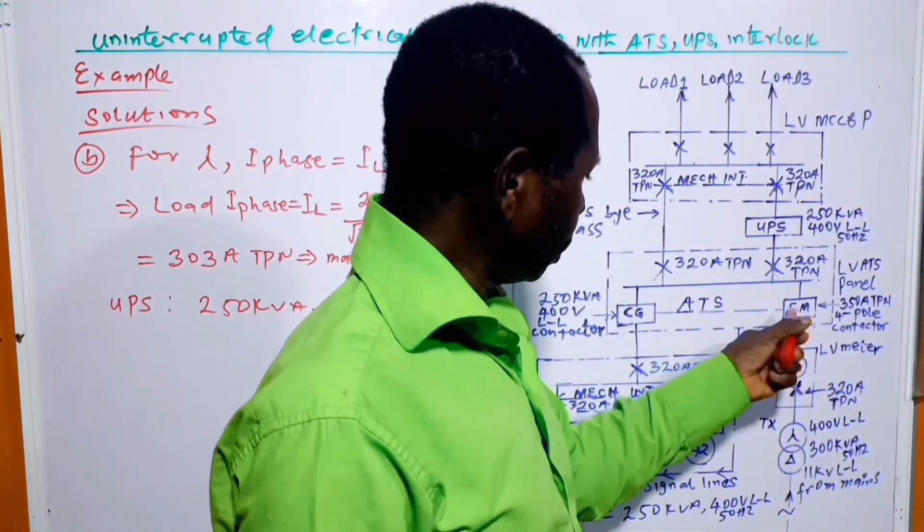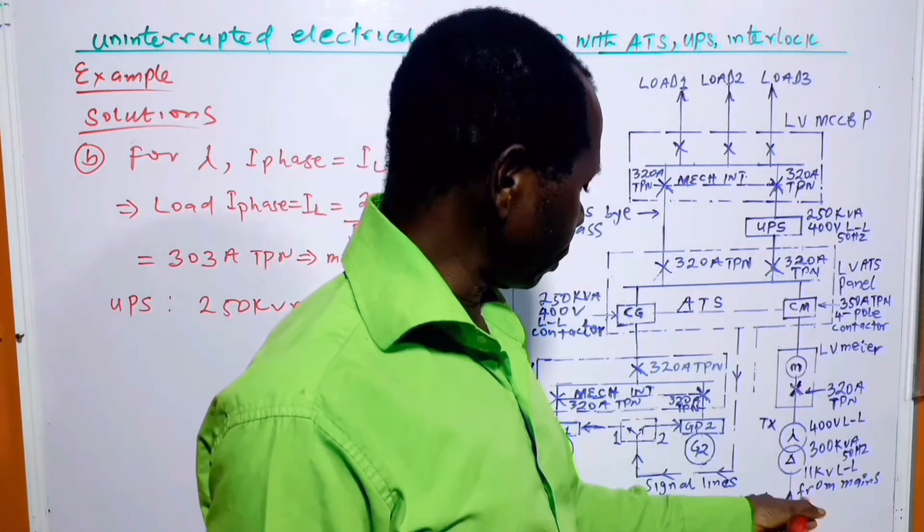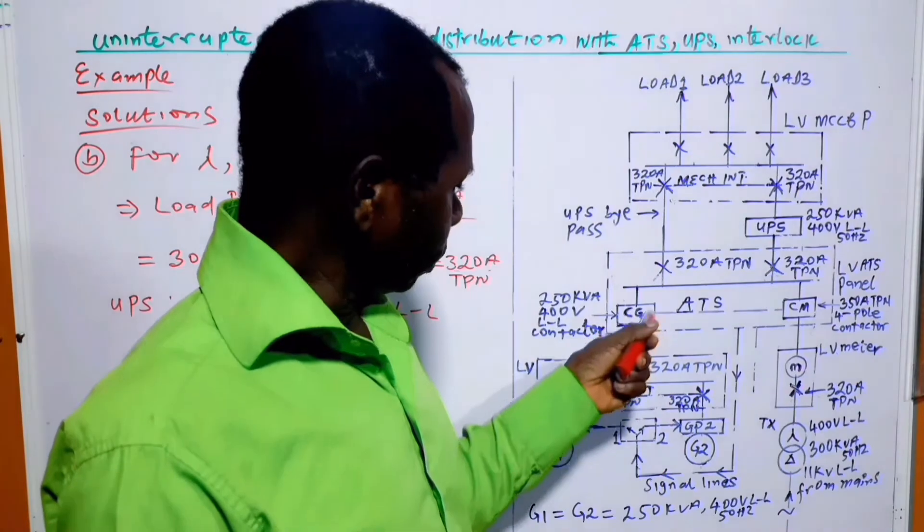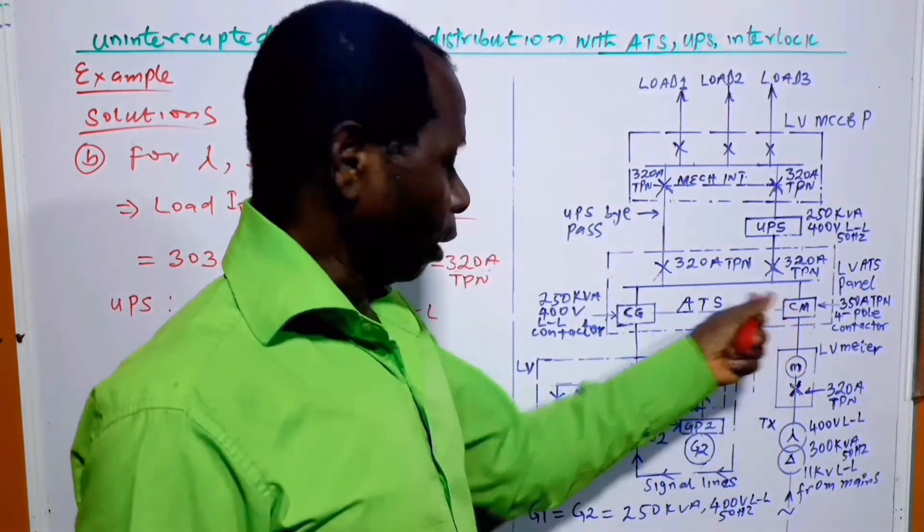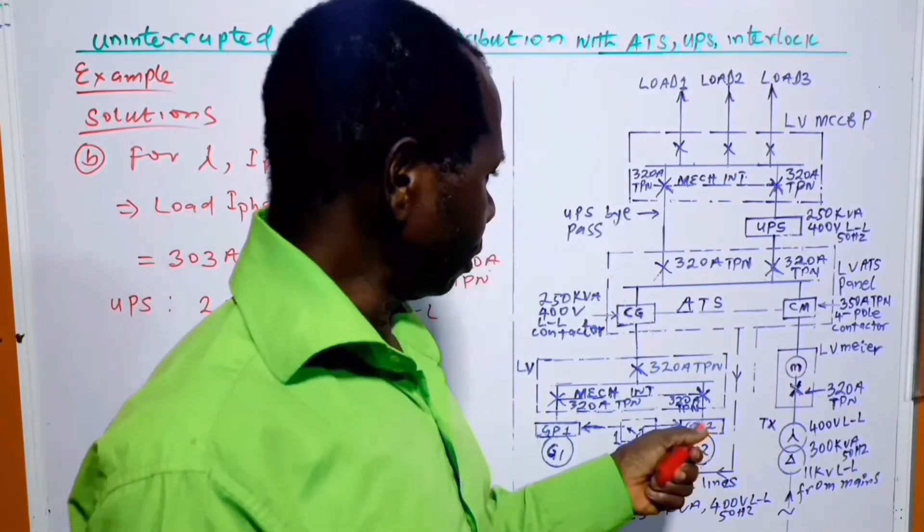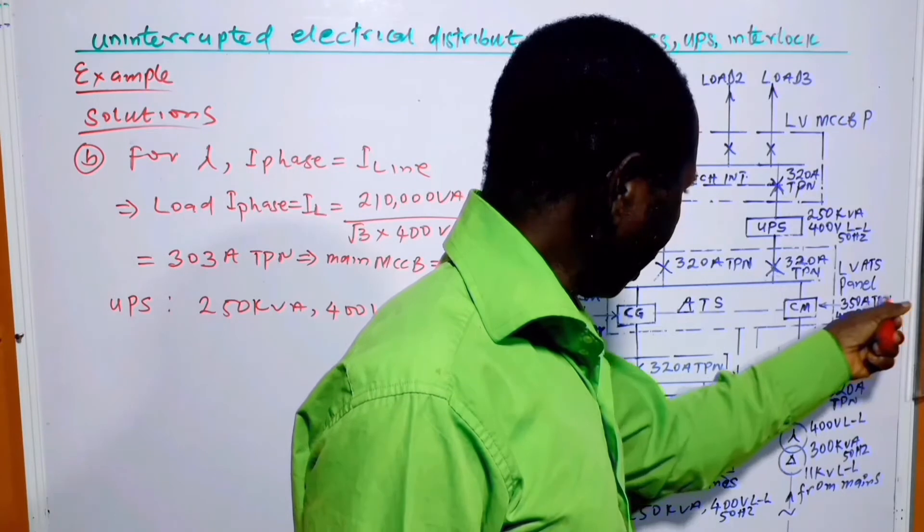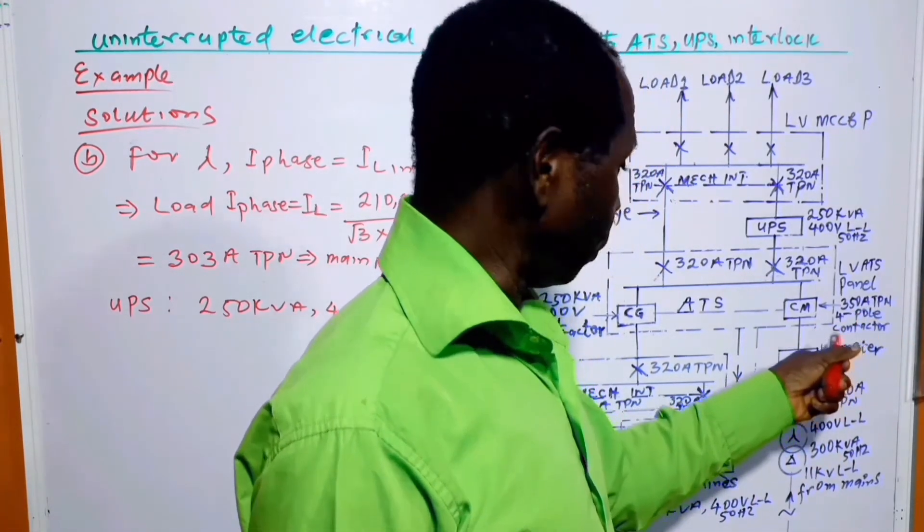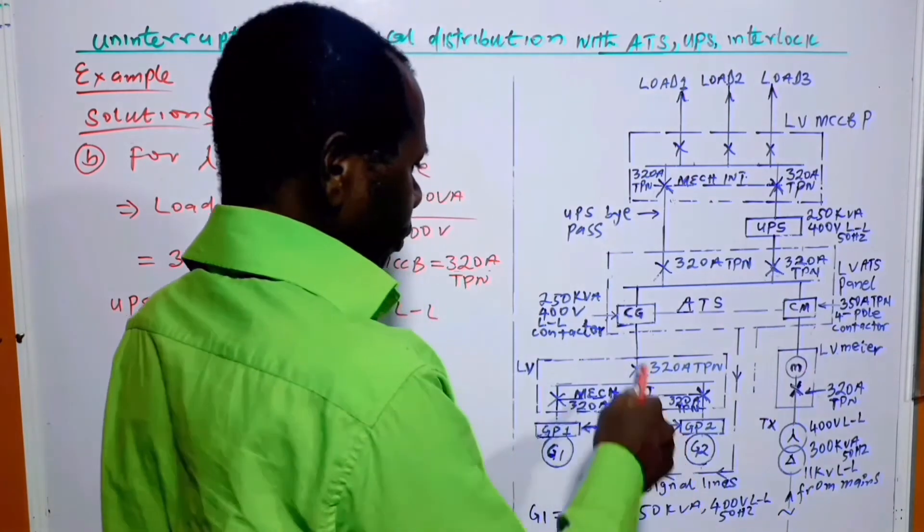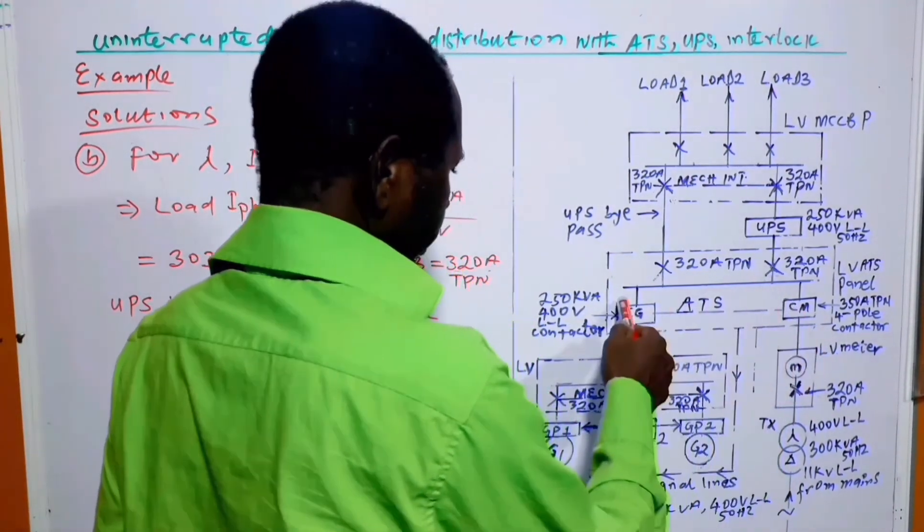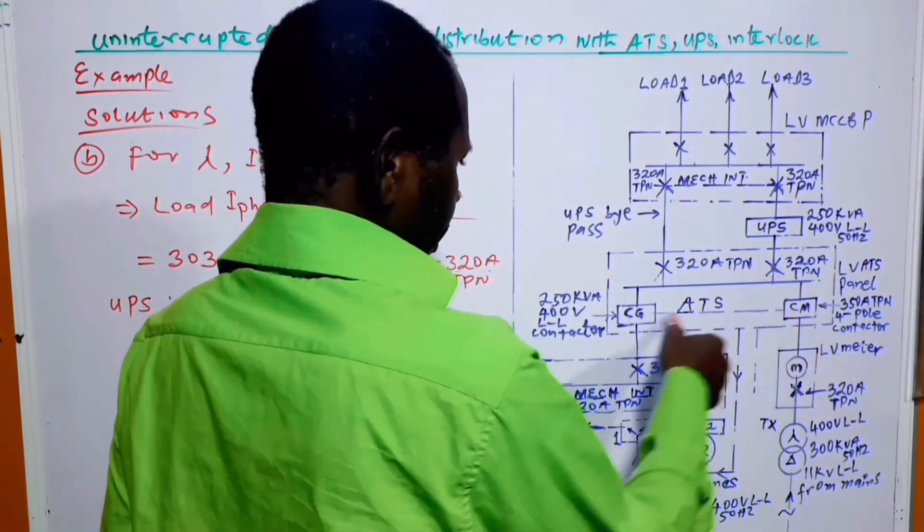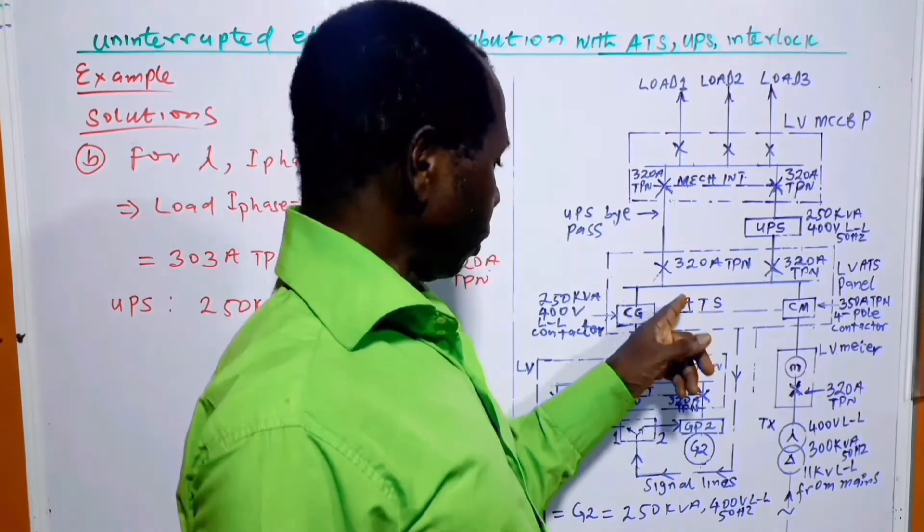From the energy meter we come to the CMAM, which means contactor for the mains supply. In order to have an automatic transfer switching system, it is easier to use a contactor or we can use a motorized circuit breaker. But in this case I am choosing to use a contactor. The contactor current rating is 350 amp triple phase with neutral or it is 4 pole contactor. Then instead of the conventional MCCBs, we are having two contactors, one from the generator system and the other one from the mains. They are now linked like this.